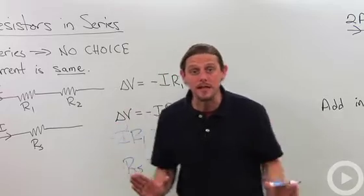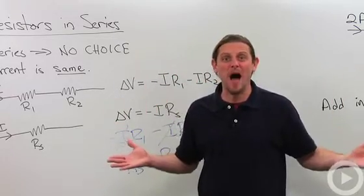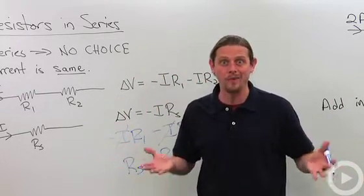So to add resistors in series, easiest thing that could possibly be. You just add the two resistances.